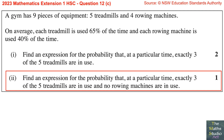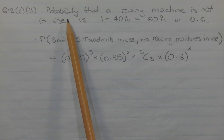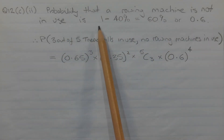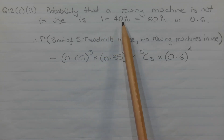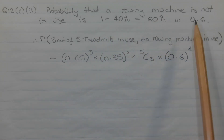Part 2. Find an expression for the probability that, at a particular time, exactly three of the five treadmills are in use and no rowing machines are in use. By the law of complements, the probability that a rowing machine is not in use at any particular time is given by one minus 40%, which equals 60%, or 0.6.